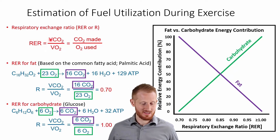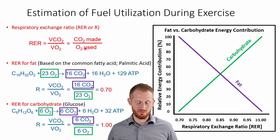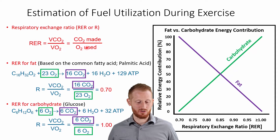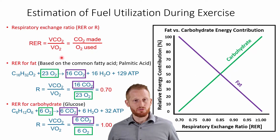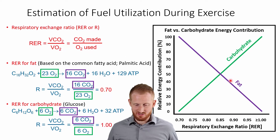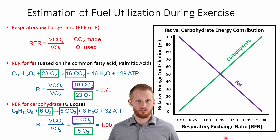It is the VCO2 — how much carbon dioxide is produced — versus the VO2 as a ratio, VO2 being how much oxygen is used. So how much CO2 is made divided by how much O2 is used. Doing this allows us to figure out how much carbohydrates we're using and how much fats we're using.